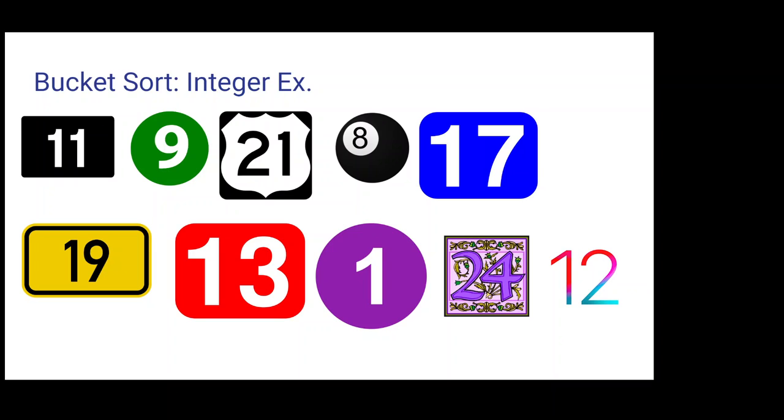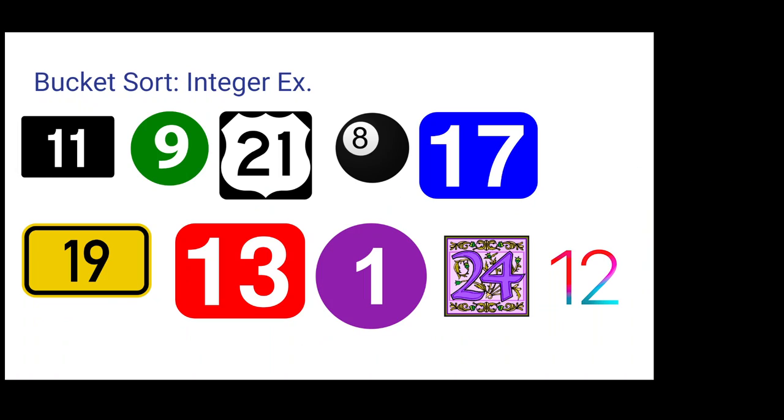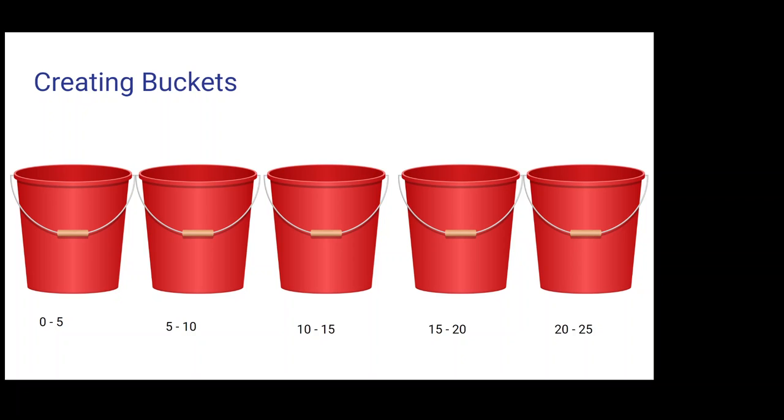The way we're going to do this is we're going to create buckets. I created five buckets. Basically, you're creating a number of buckets with ranges that make sense for the elements we have. In the elements we have, ranging from 1 to 24, I thought it best made sense to have five buckets at intervals of five.